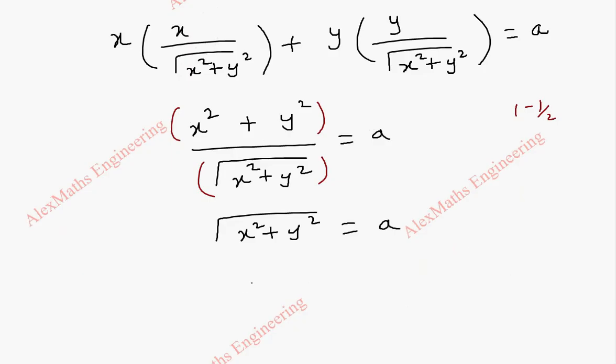Squaring on both sides we get x squared plus y squared equals a squared. This is the required envelope for the given curve. All right, thank you.